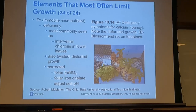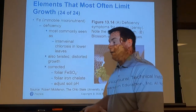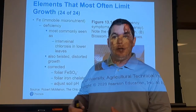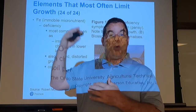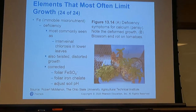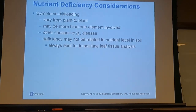Iron deficiency is most commonly seen as interveinal chlorosis. We can correct it with a foliar spray of iron sulfate. Iron is a component of photosynthesis and chlorophyll — on golf courses, iron sulfate is applied to green up turf without stimulating excessive growth, and the plant begins performing photosynthesis much better.